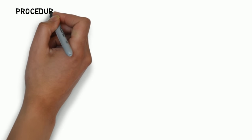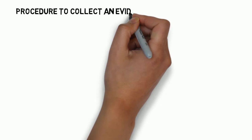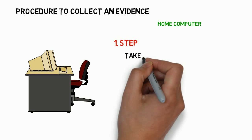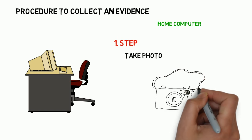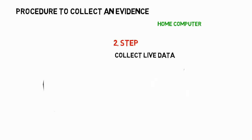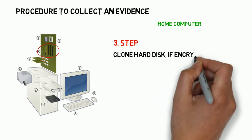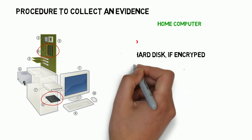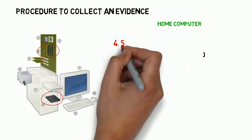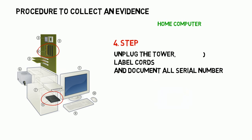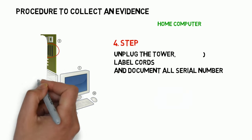When evidence is being collected from a stand-alone home computer, the best way to keep it all intact is to follow this procedure. In the first step, leave the computer off if it is off and photograph the scene and computer — if the screen is on, photograph the screen as well. The second step is to collect any live data like RAM and network connections. In the third step, collect a logical image if the hard disk is encrypted. The fourth step is about unplugging the computer by removing the plug from the tower, removing the battery, labeling all cords, and documenting the device model and serial numbers.